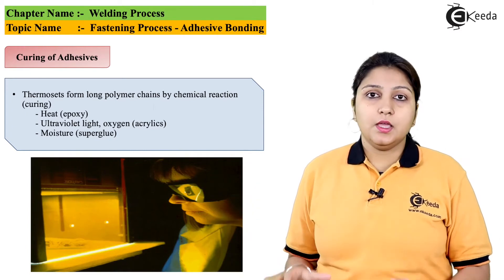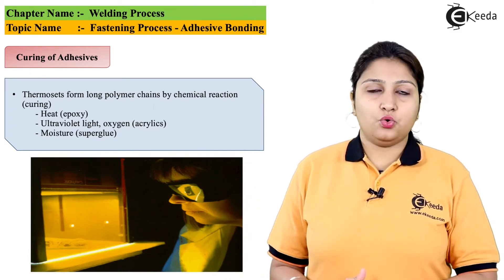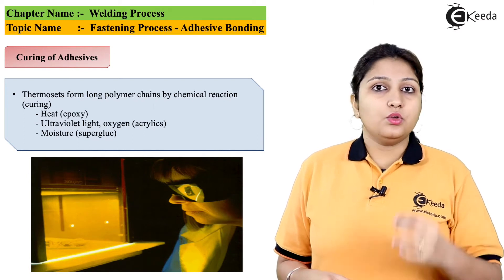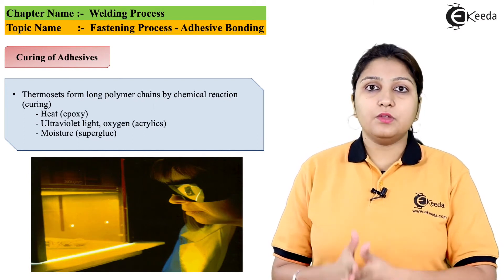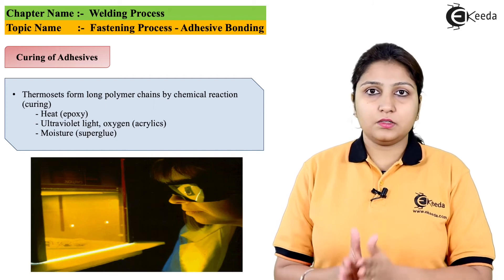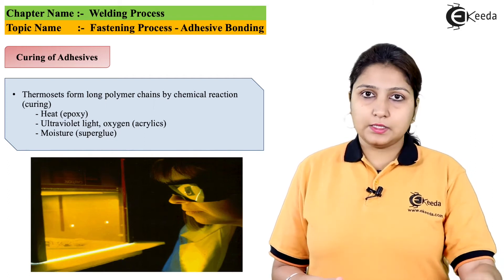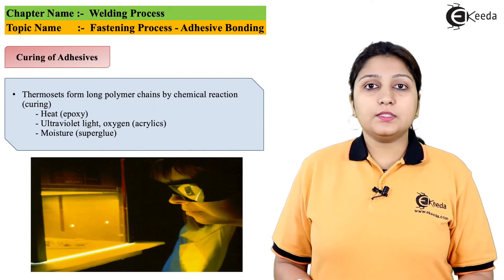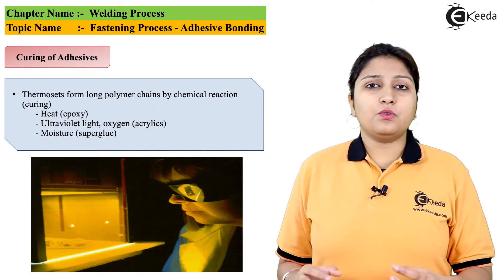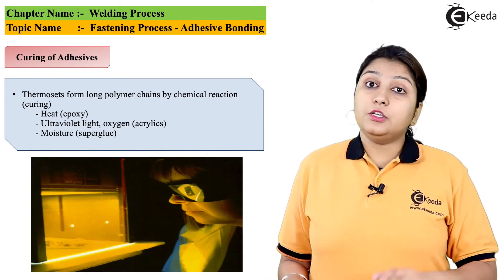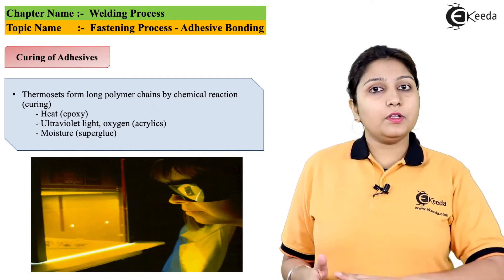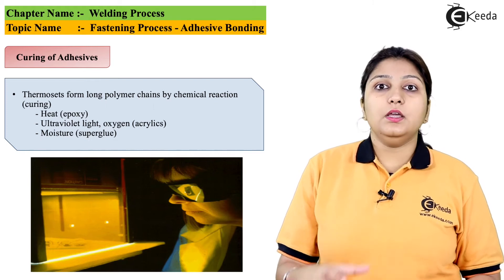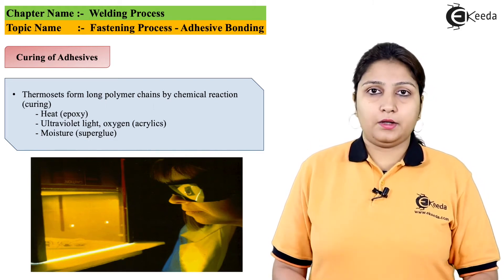In this diagram, the curing process is being shown. What you have to do is place your adhesive-coated metal part inside. Heat is supplied along with some amount of moisture, and curing is done. After applying your adhesive on the object, exact curing is carried out to set the bonded part.